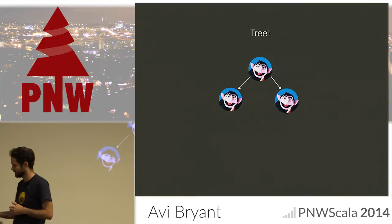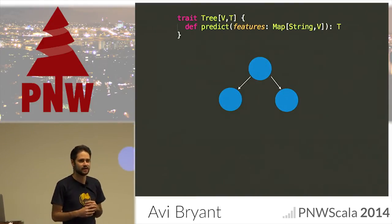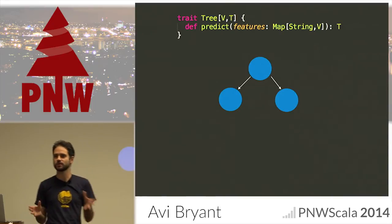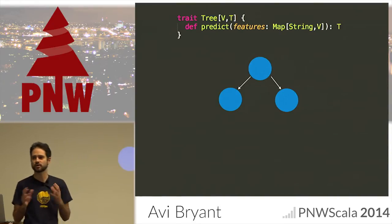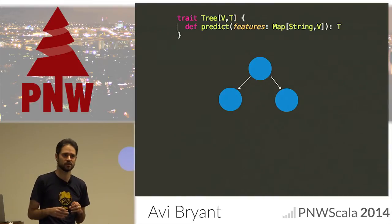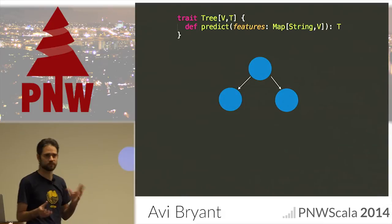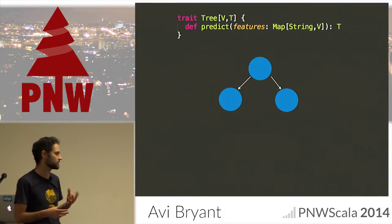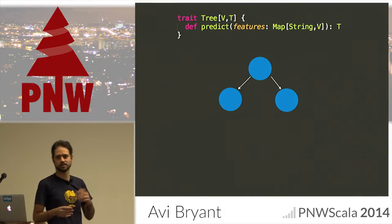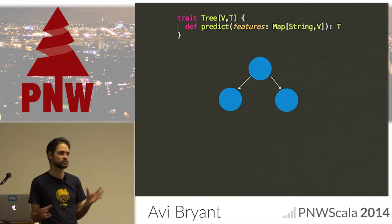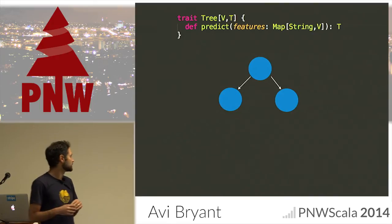And in particular, we're going to talk about decision trees. The first thing you need to know about a decision tree is that it's for making predictions. The basic interface to a tree in Brushfire — but just conceptually — is that you need to be able to give it a bunch of features, a vector of features, a map in this case from strings